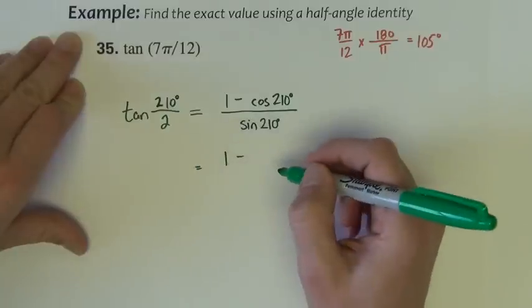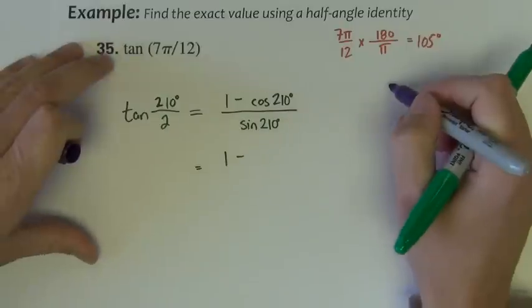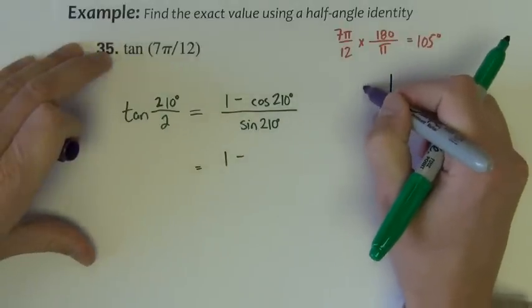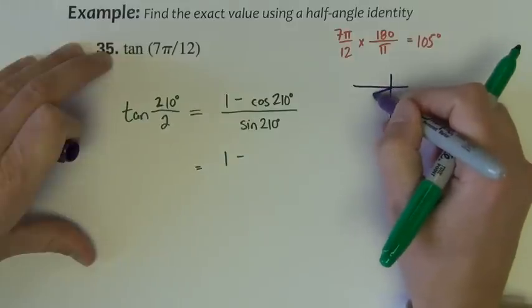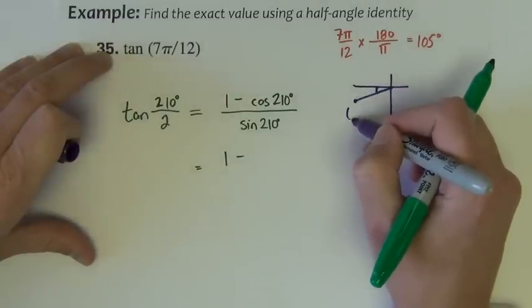So that's 1 minus, now we have to think of where 210 degrees are. 210 degrees, it's right here, it's 30 degrees past 180, so this is the point in question that we want.